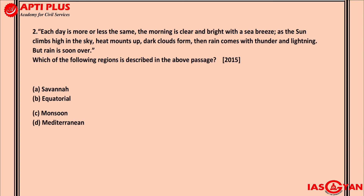The second question has a passage describing a particular area of the earth. The passage reads: 'Each day is more or less the same. The morning is clear and bright with the sea breeze. As the sun climbs high in the sky, heat mounts up, dark clouds form and then rain comes with thunder and lightning. But rain is soon over.' Which of the following regions is described? This was asked in 2015.